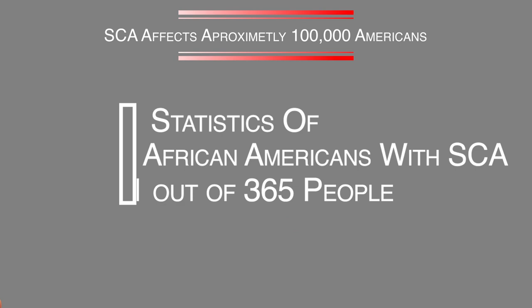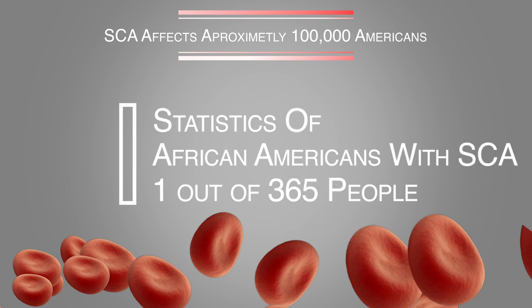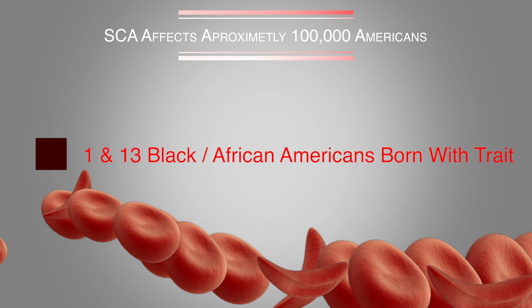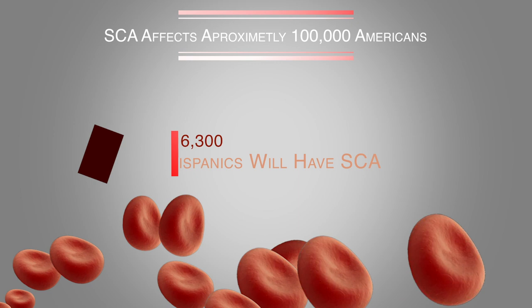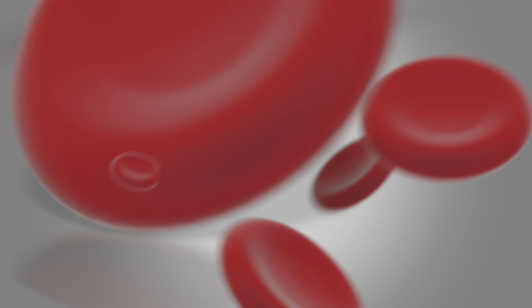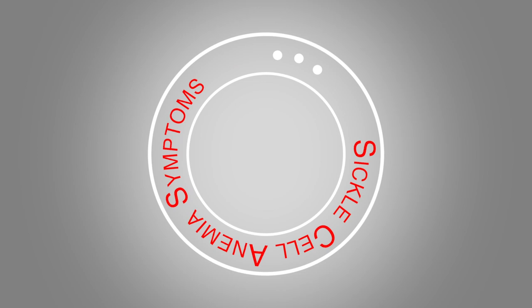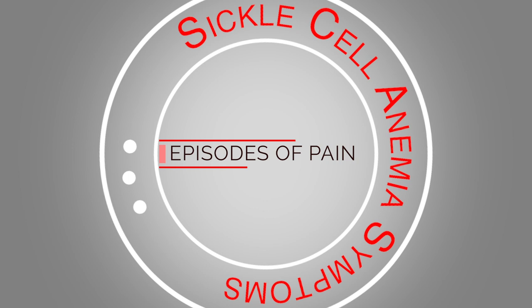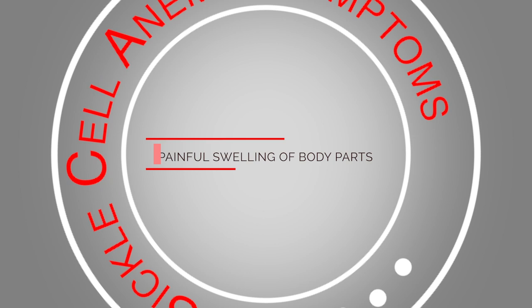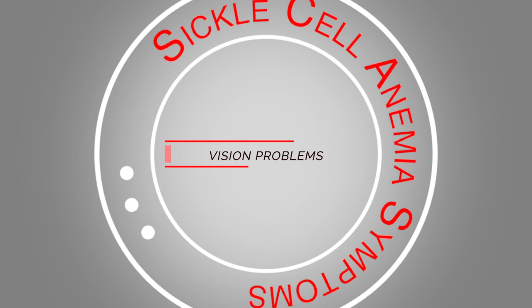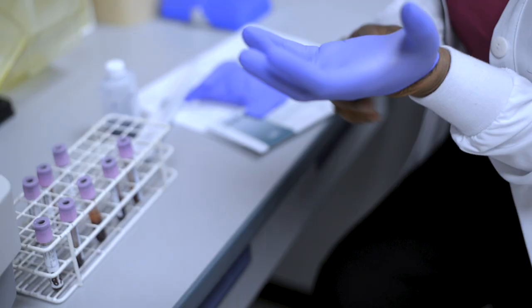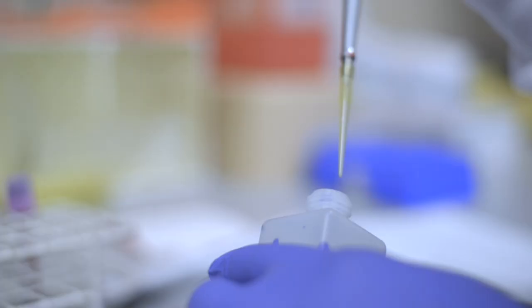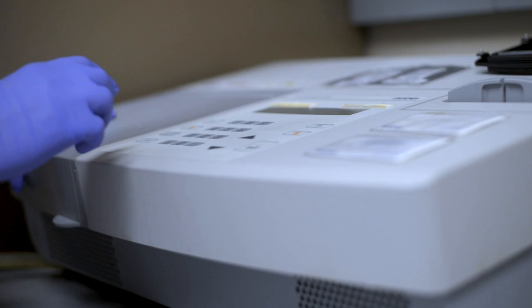Although it has been statistically proven that African Americans are significantly affected by sickle cell anemia disease, there is also a small percentage of Hispanics who are affected by this disease. Symptoms included with sickle cell anemia are episodes of hard-to-manage pain, usually known as a sickle cell crisis, painful swelling of hands and feet, frequent infections, delayed growth, vision problems, and anemia. Most sickle cell patients tend to live a very conservative life, avoiding excessive risk, which may predispose them to frequent hospital stays.